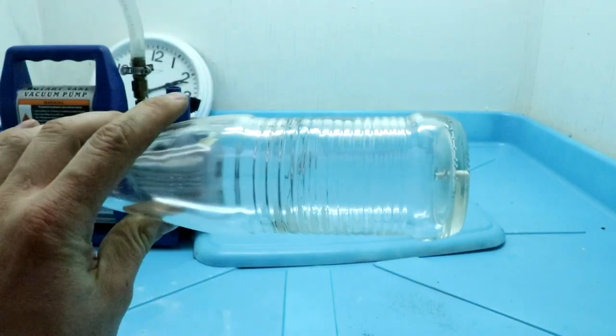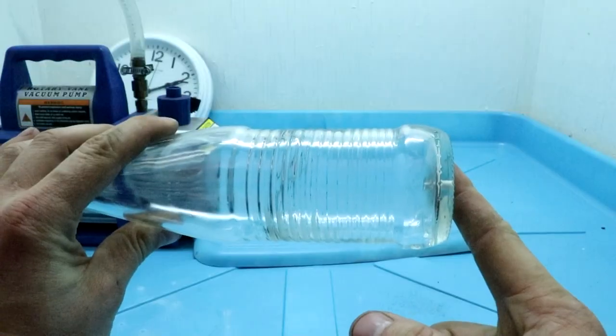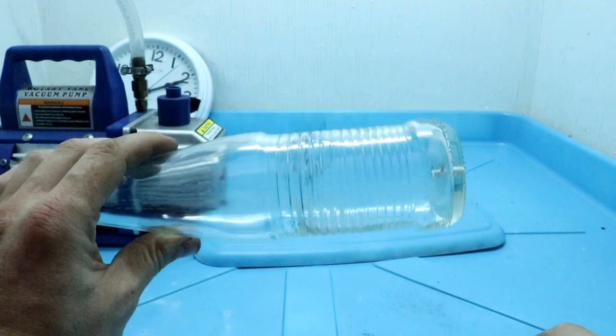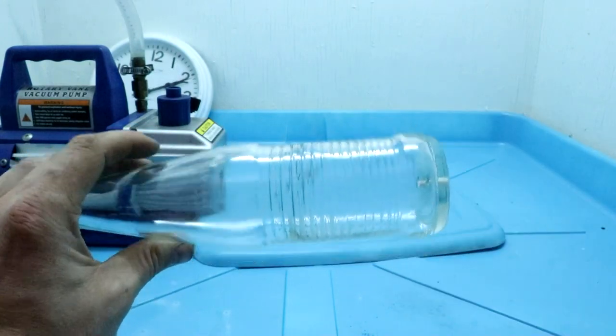So the question is what happens if I try to seal such a hole with my finger? So this is simulating outer space. Of course this vacuum pump can't get quite down to the vacuum levels of space but it gets pretty low.